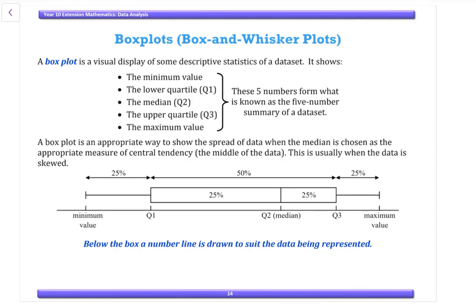The five number summary includes the minimum value, the lower quartile or Q1, the median or Q2, the upper quartile known as Q3, and the maximum value. You can either have a line at the end or you'll see two dots at the end. Either way it doesn't really matter.